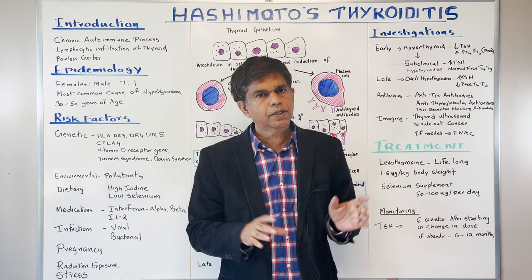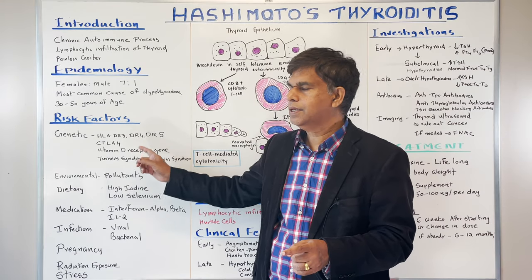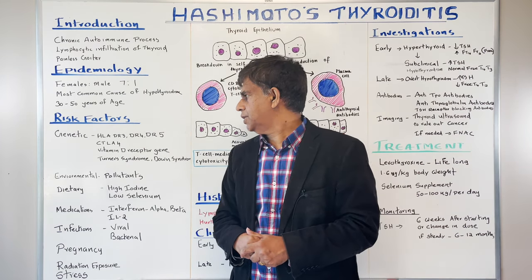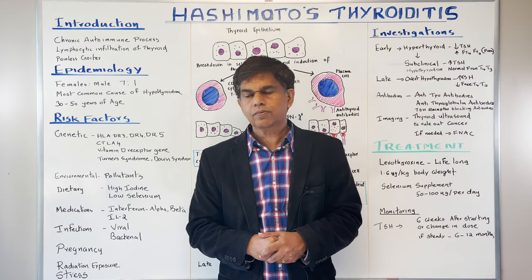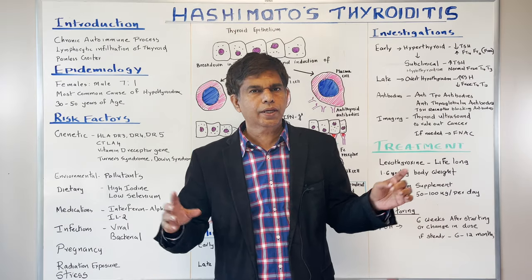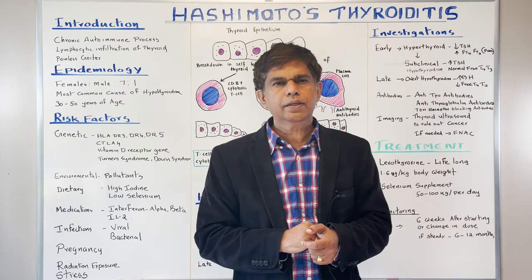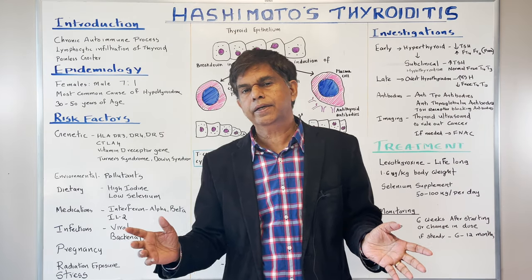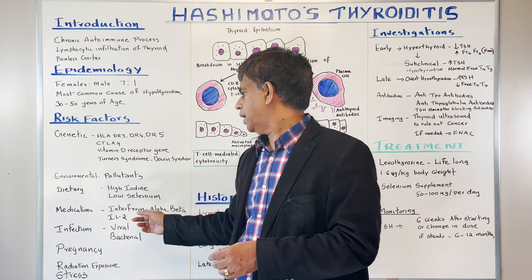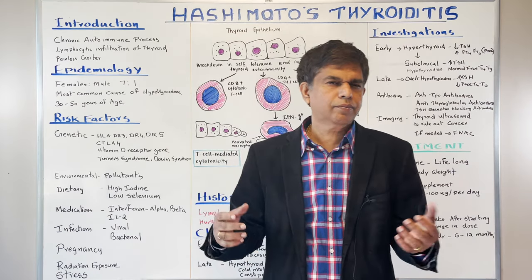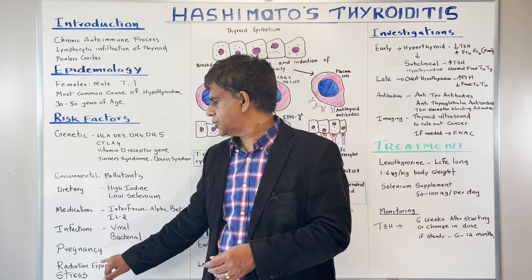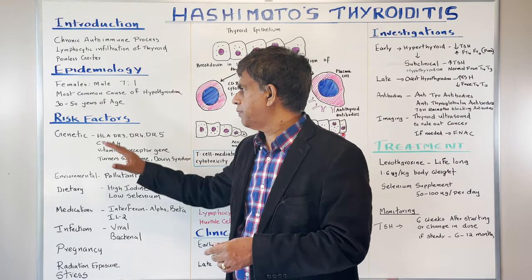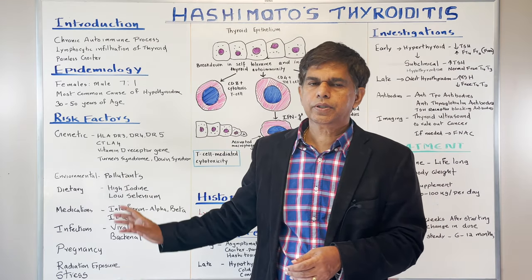Now for risk factors — starting with genetics: HLA-DR3, DR4, and DR5 are involved, as well as CTLA4 and the vitamin D receptor gene. Turner syndrome and Down syndrome may also be involved. Environmental factors include pollutants, dietary factors such as high iodine diet and low selenium diet, medications like interferon alpha and IL-2, infections of any type — viral or bacterial — as well as pregnancy, radiation exposure, and stress.